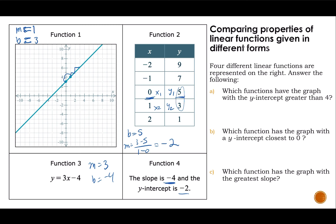Which functions have a y-intercept greater than four? The only function with a y-intercept greater than four is function two, because its y-intercept is five. Which function has the graph with the y-intercept closest to zero? We've got five, three, negative four, and negative two — so it would be negative two, which is number four. Which function has the greatest slope? I've got slopes of one, three, negative four, and negative two, so it's going to be three — function three.